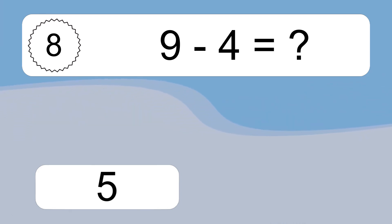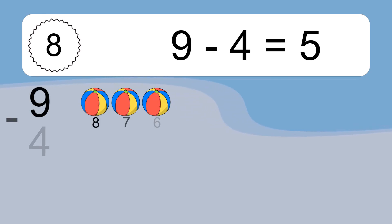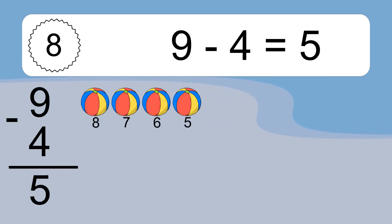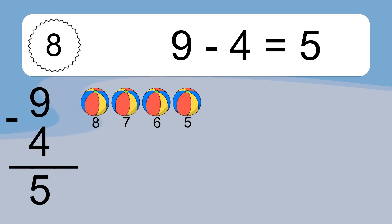9 minus 4 equals 5. Let's count it. 8, 7, 6, 5.